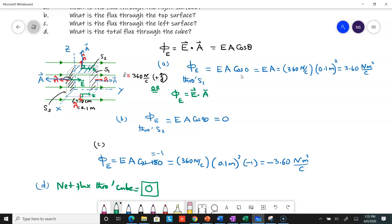You could do Φ_E = E·A. The electric field has no x component, it's 360 newtons per Coulomb in the y direction, nothing in the z.